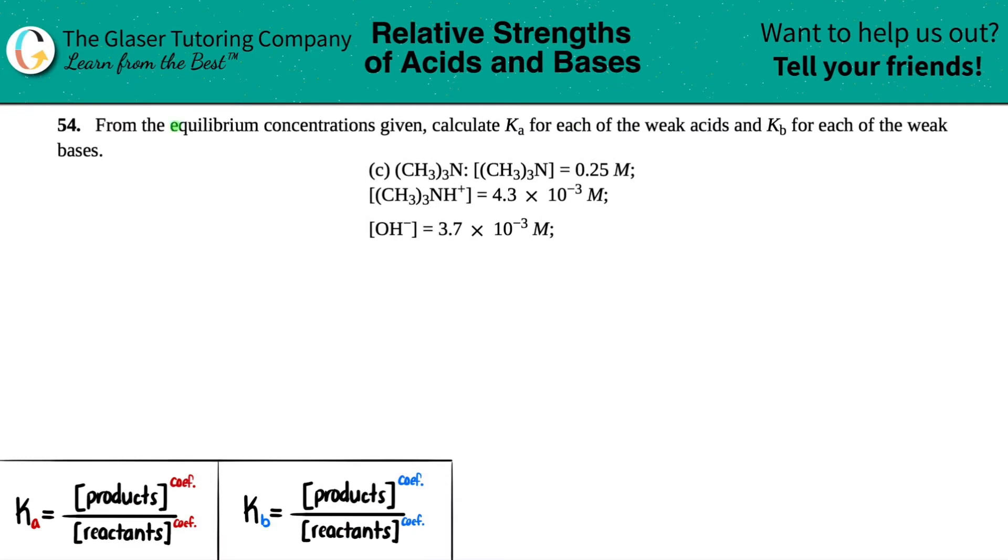Number 54: From the equilibrium concentrations given, calculate the Ka for each of the weak acids and Kb for each of the weak bases. We have letter C, which is (CH3)3N. At equilibrium we have a concentration of 0.25 molarity, a (CH3)3NH+ concentration of 4.3 times 10 to the negative third molarity, and an OH- concentration of 3.7 times 10 to the negative third molarity.